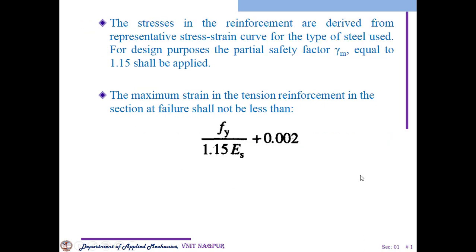The partial safety factor gamma m is always equal to 1.15, which we consider during design also. The formula for maximum strain in tensile reinforcement at failure shall not be less than a particular value — that is 0.87 Fy / Es + 0.002. Whatever the strain in your tensile reinforcement, that should be more than this value. If your value is less than this, your section will definitely fail.